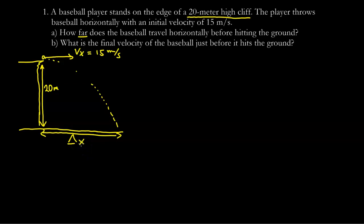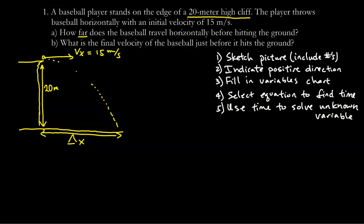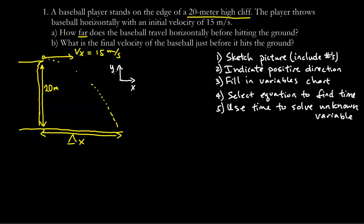Step two is to indicate the positive direction. I'm going to make right positive and up positive. This is arbitrary — I could have made down positive or left positive — but you try to minimize negative numbers. As long as you're consistent, that's fine.